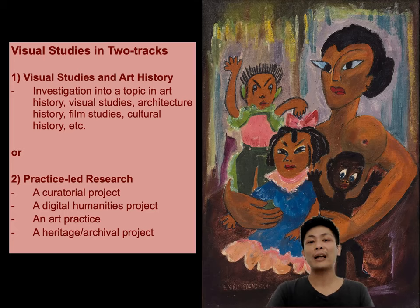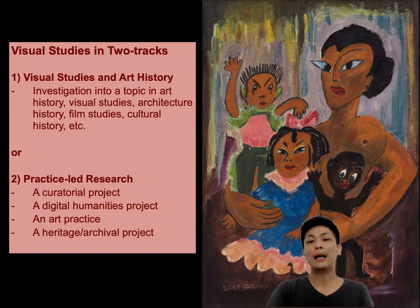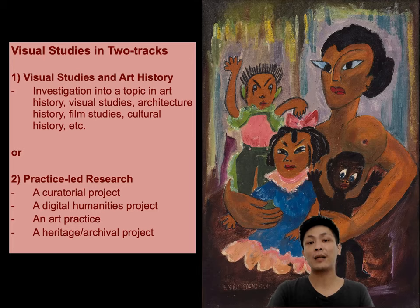Similar to our first track, candidates pursuing practice-led research will be investigating a research topic as part of their learning journey. However, in track two, the investigation takes the form of realizing a creative project or practice. The difference here is important, being that the candidate's practice and project becomes a central method to the investigation. In the end, the candidate is still required to produce a written thesis, and the strength of the research is ultimately evaluated based on the written thesis itself.